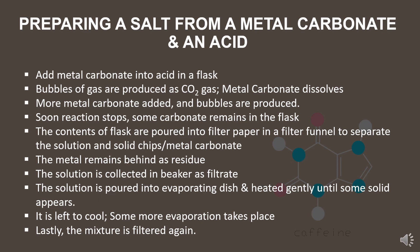Step 5: The contents of the flask are poured into filter paper in a filter funnel to separate the solution and the solid chips or metal carbonate. Step 6: The metal carbonate remains behind as residue. Step 7: The solution is collected in a beaker as filtrate. Step 8: The solution is poured into an evaporating dish and heated gently until some solid appears. Step 9: It is left to cool, and some more evaporation takes place.